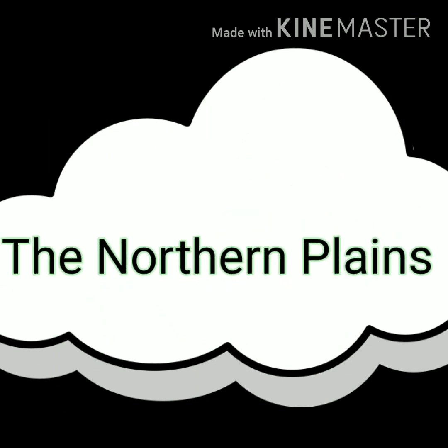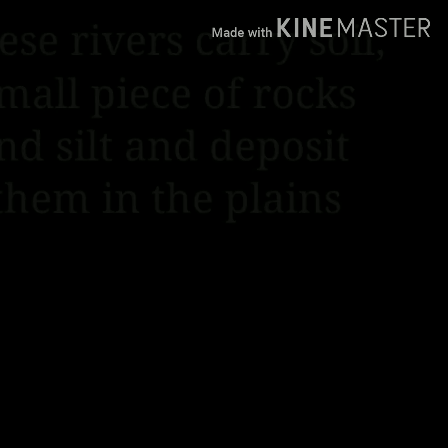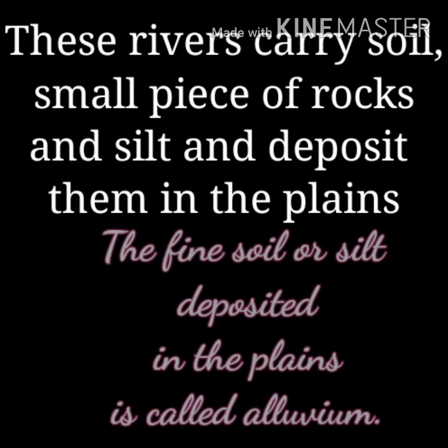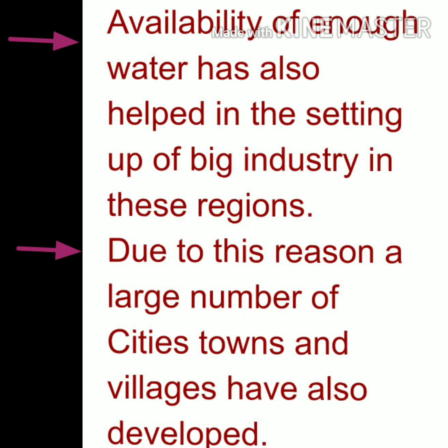The northern plains are one of the landforms on the earth's surface. These plains lie in the path of the rivers originating from the Himalayas — Ganga, Yamuna and Brahmaputra. The rivers carry soil, small pieces of rocks and silt, and deposit them in the plains. That fine soil or silt deposited in the plains is called alluvium, and alluvium is very fertile and good for growing various types of crops. The flat surface of the northern plains and availability of enough water also helped in the setting up of big industries, and is also the reason why a large number of cities, towns and villages have developed along the banks of these rivers.